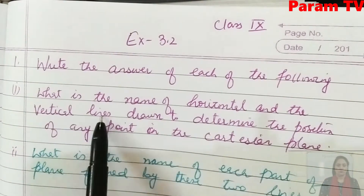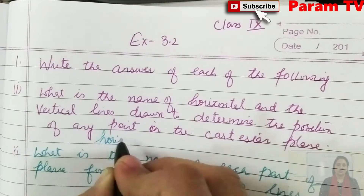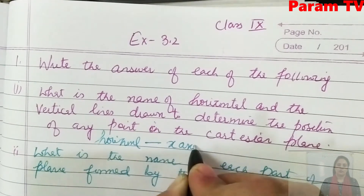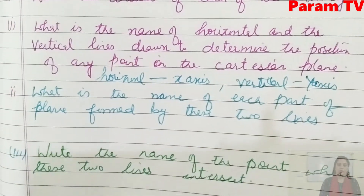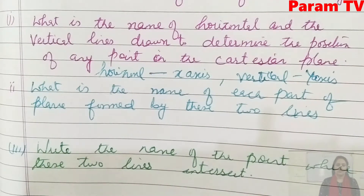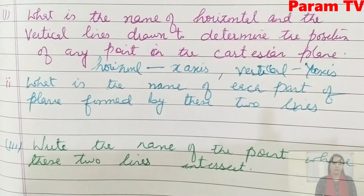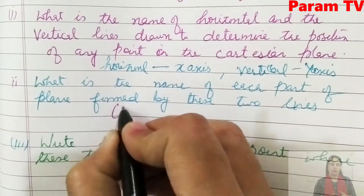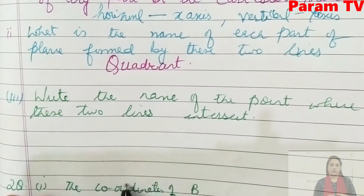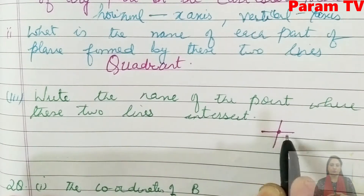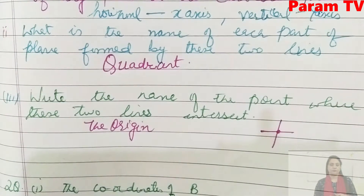First question: What is the name of the horizontal and vertical lines drawn to determine the position of any point in the Cartesian plane? The horizontal line is called x-axis and the vertical line is called y-axis. The parts of the plane formed are called quadrants. The point where these two lines intersect is called the origin.